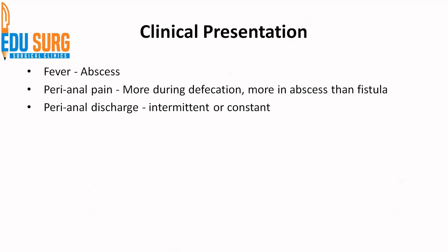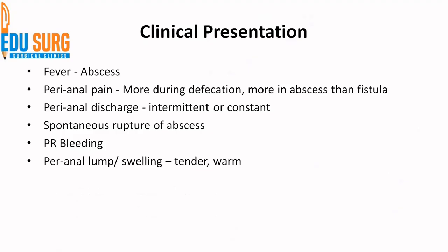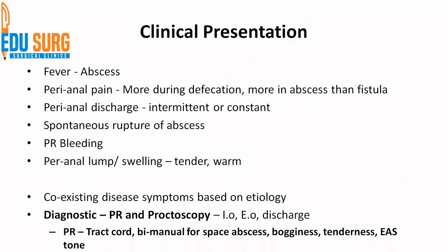Pain and sometimes discharge, or a spontaneous occurrence of discharge, may suggest the rupture of an abscess. Discharge may be intermittent or constant. Spontaneous rupture of abscess is known. PR bleeding usually happens once the abscess ruptures. Perianal lump or swelling is also a feature of abscess — it will be tender and warm. You can have coexisting disease symptoms based on etiology. These are some of the common presentations of anogenital sepsis and how you can differentiate it from fistula in ANO when present alone without an abscess.